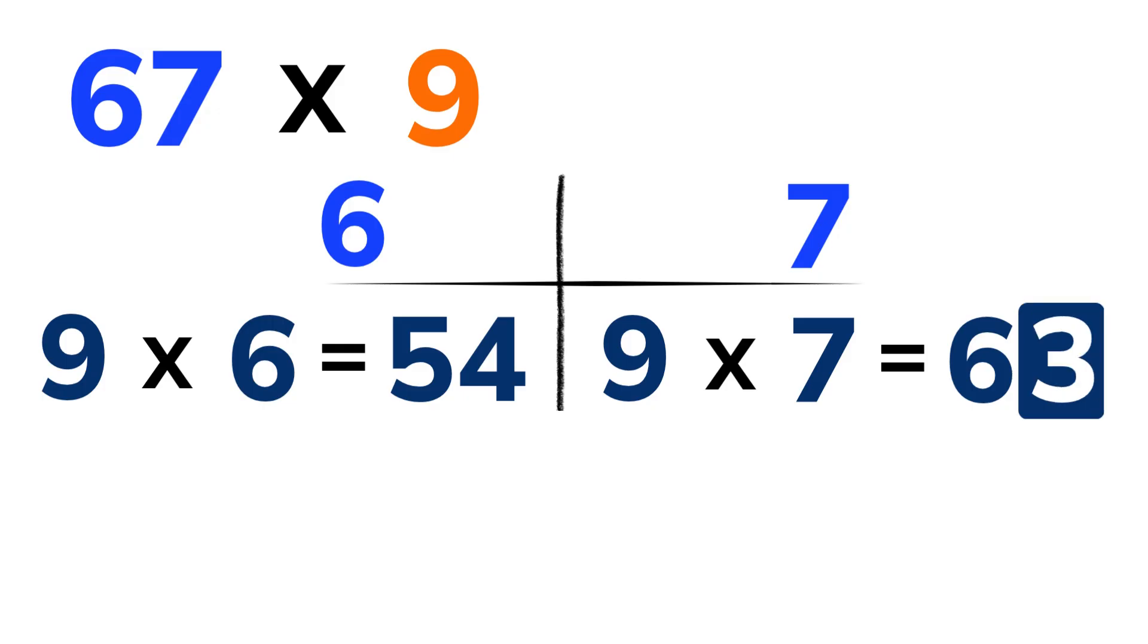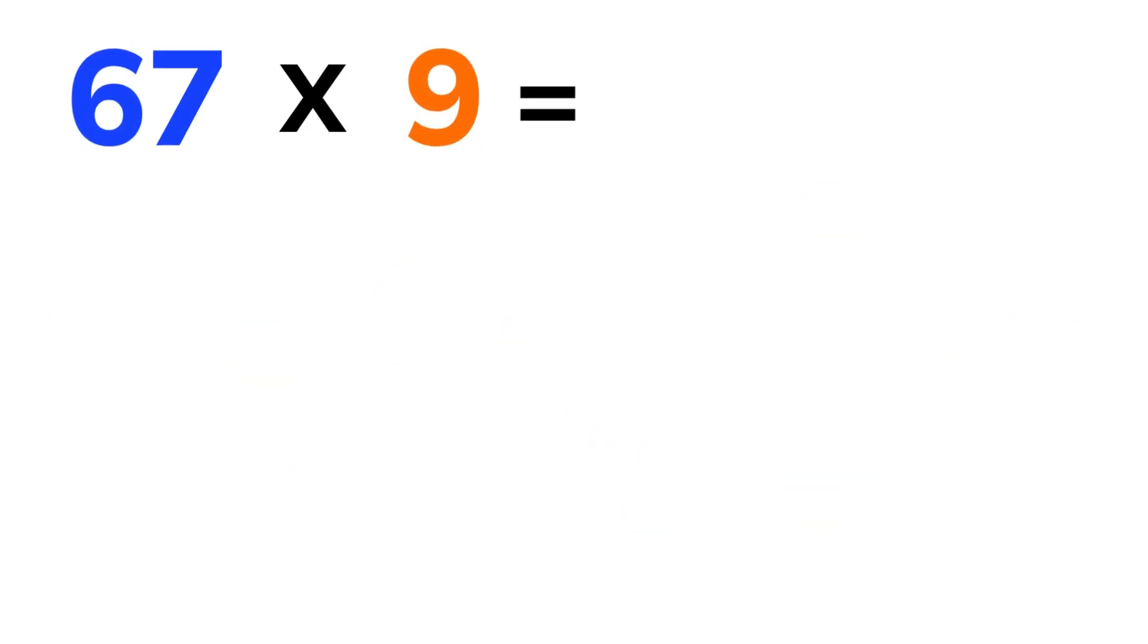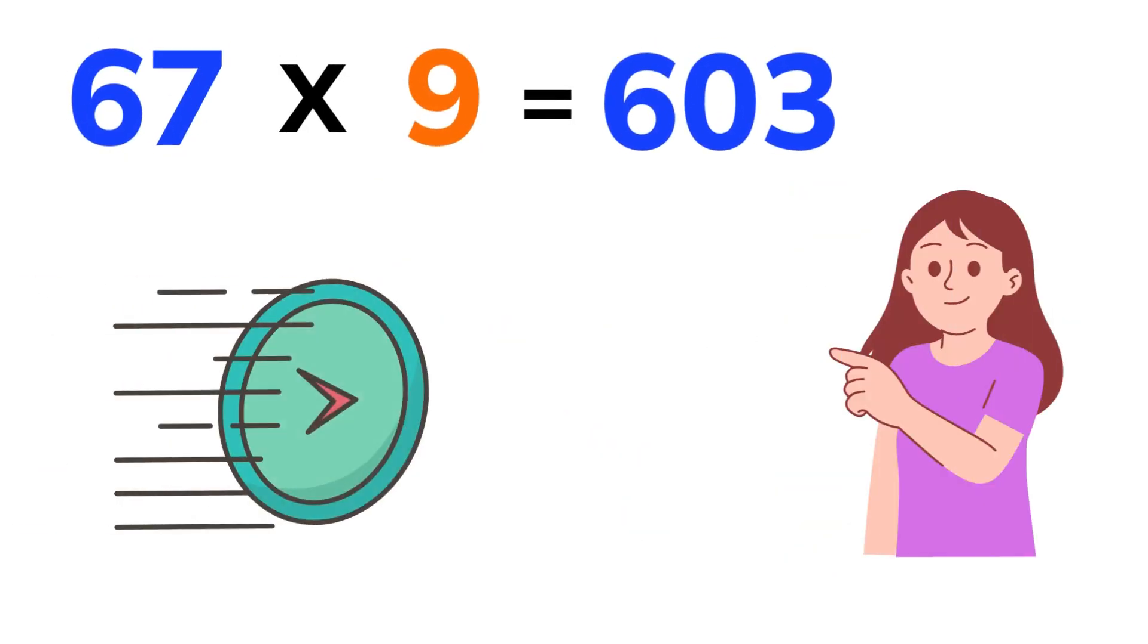Now 9 times 6 is equal to 54, and 9 times 7 is equal to 63. Take the 3 from 63, and write it down here. Then take the 6 and add it to 54. 54 plus 6 is equal to 60. So the answer to 67 times 9 is 603. See how quick and clean that was?